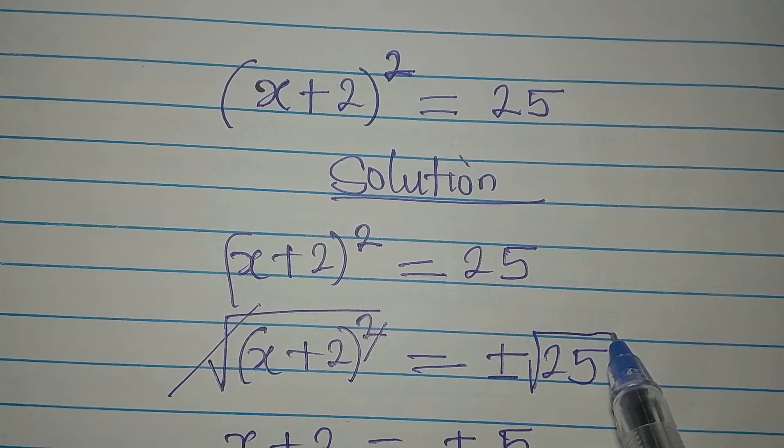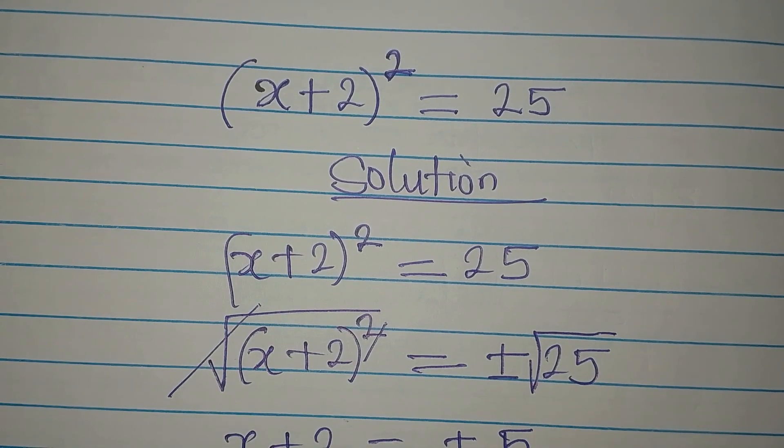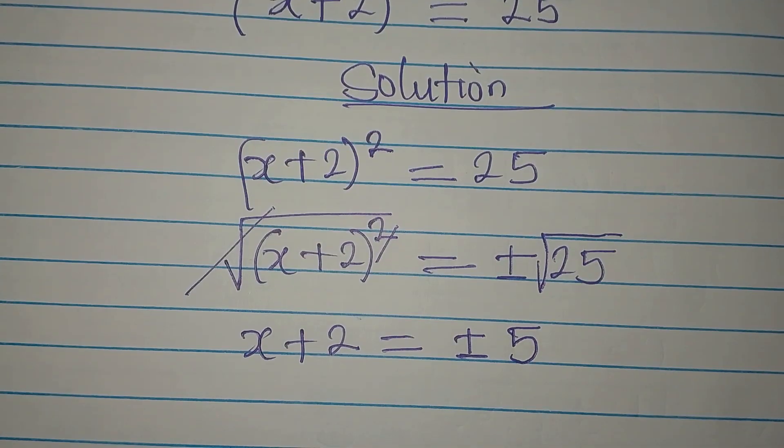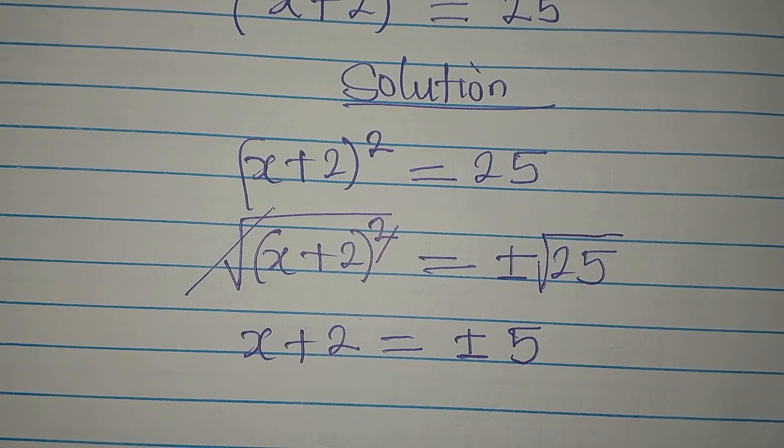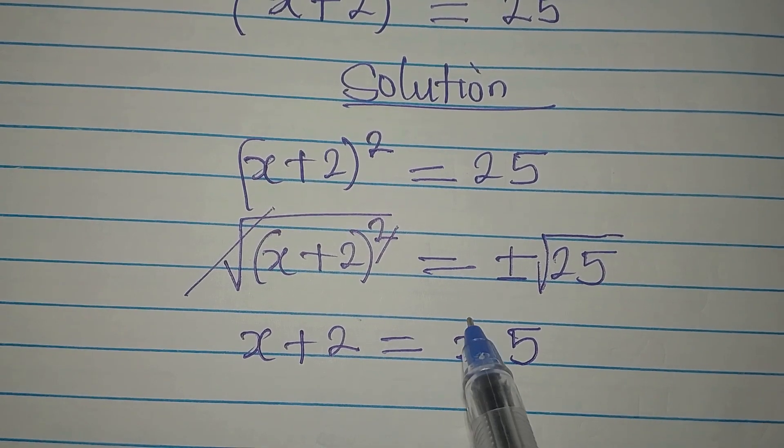Because there's supposed to be square root of 25 over there, right? Now, here is what we're going to do.